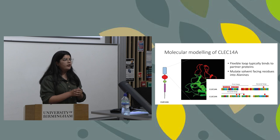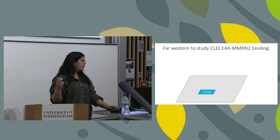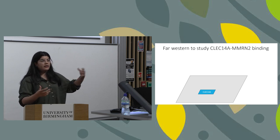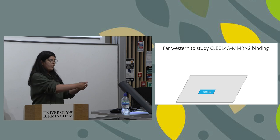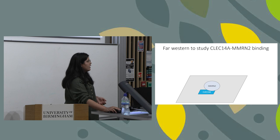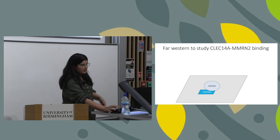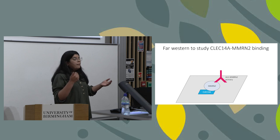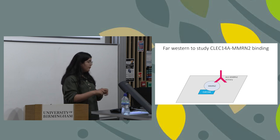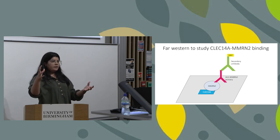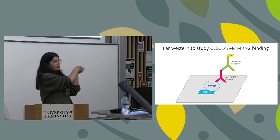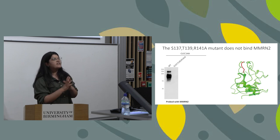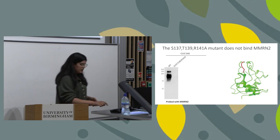We performed a small assay called a far western. It's very similar to a western blot: you take your protein of interest — in our case, normal or mutant forms of CLEC14A — run it on a gel, and transfer it onto a membrane. The membrane with our CLEC14A variants is then incubated with the partner protein of interest, multimerin 2, to see whether CLEC14A binds to it. We wash this off, then probe the membrane with antibodies targeting multimerin 2. A secondary antibody conjugated to horseradish peroxidase allows us to visualize the bands.